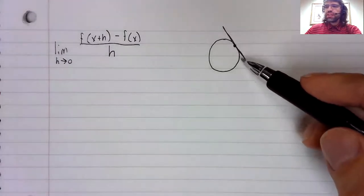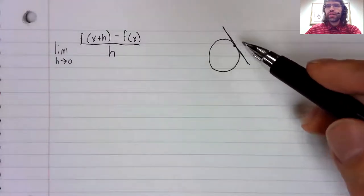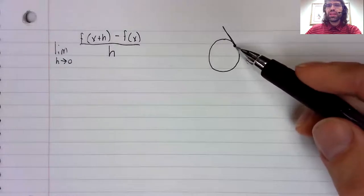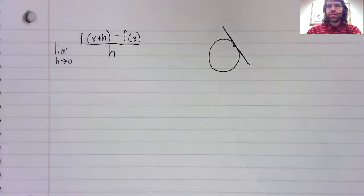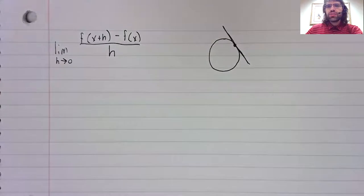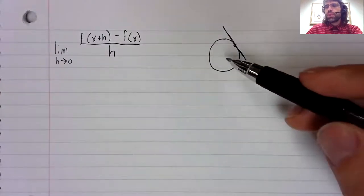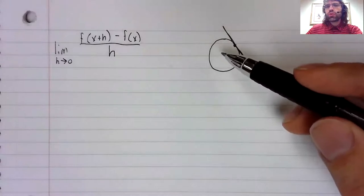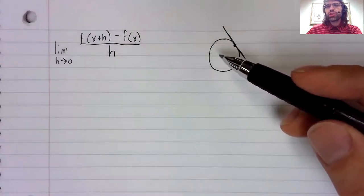So if this is a tangent line, its slope should be a derivative. At least, that's how it may seem, but this circle isn't a function.